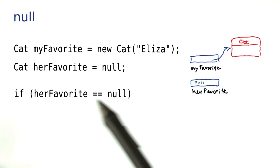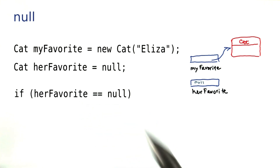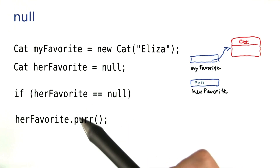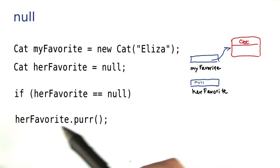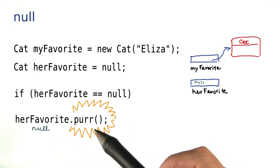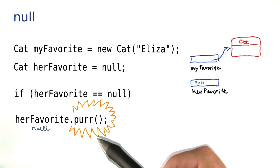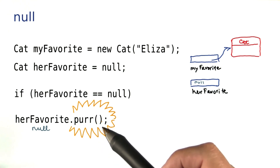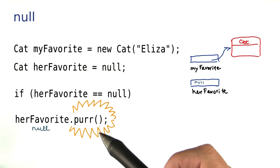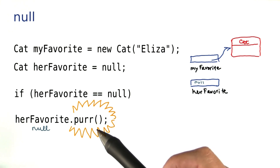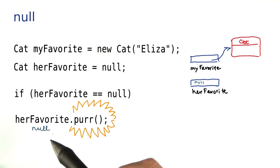Now if there is a chance that an object variable contains null, it is important that you make that test. Because if you invoke a method on a null reference, something bad happens and the method call blows up — well, it doesn't really blow up of course, but it does terminate your program with a null pointer exception. It is simply illegal to call any method on null.